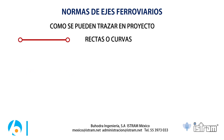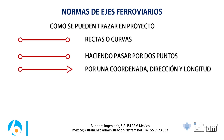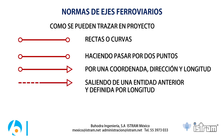¿Cómo se pueden trazar en el proyecto? Pueden ser entidades rectas o curvas. Este tipo de entidades han de poder trazarse haciéndolas pasar por dos puntos — rectas de dos puntos o curvas de dos puntos. Otra manera es hacerlas pasar por una coordenada, indicar una dirección o azimut, y también asignar una longitud. Cuando ya se tiene una geometría previa, se podría enlazar a la entidad previa haciéndola girar de acuerdo a una cierta longitud o cobertura angular.